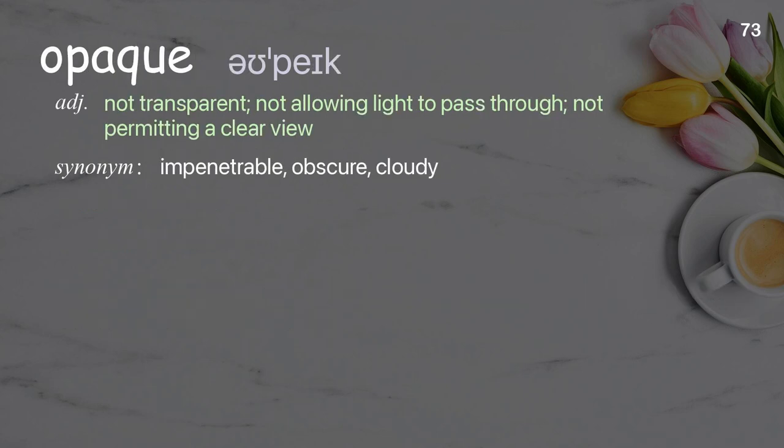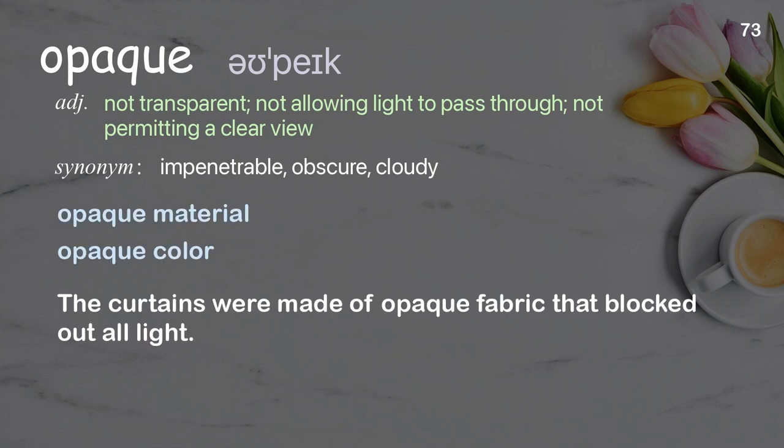Opaque: Not transparent; not allowing light to pass through; not permitting a clear view. Examples: Opaque material, opaque color. The curtains were made of opaque fabric that blocked out all light.